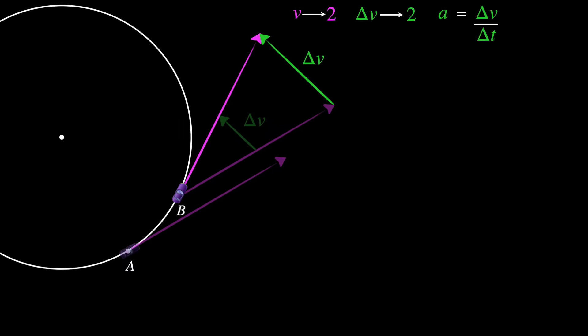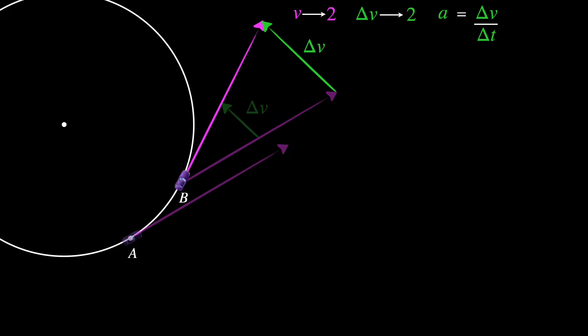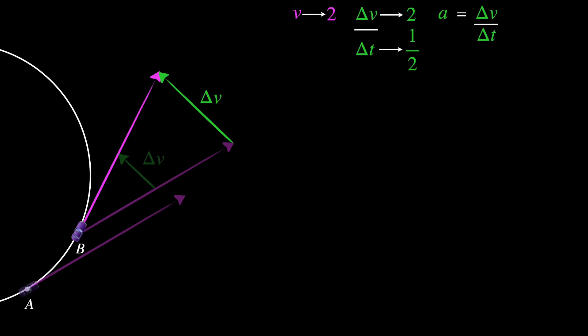Now the car is going twice as fast as before, which means the time it takes should reduce to half. Now we can put it all together: we have twice the change in velocity in half as much time, which means the acceleration actually increases four times — or two squared times as before.